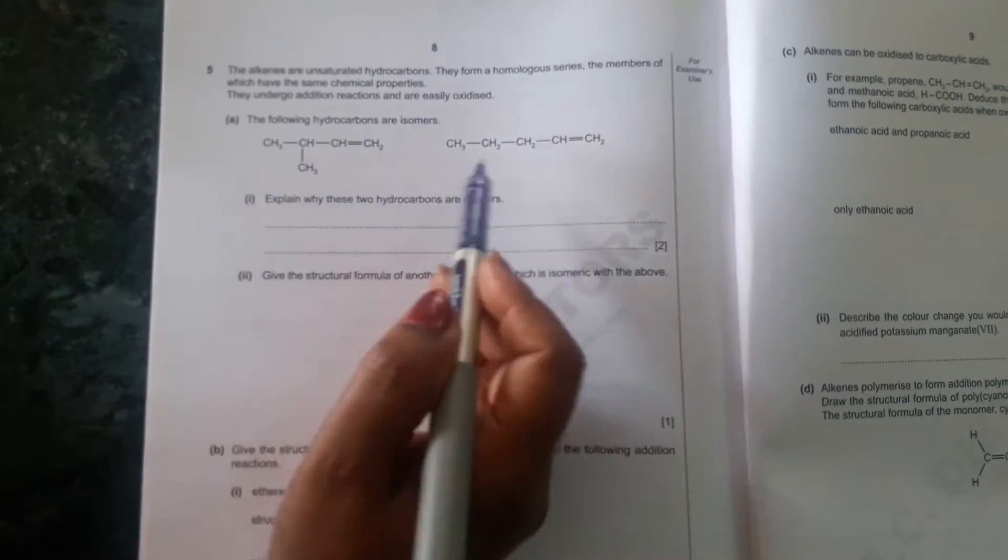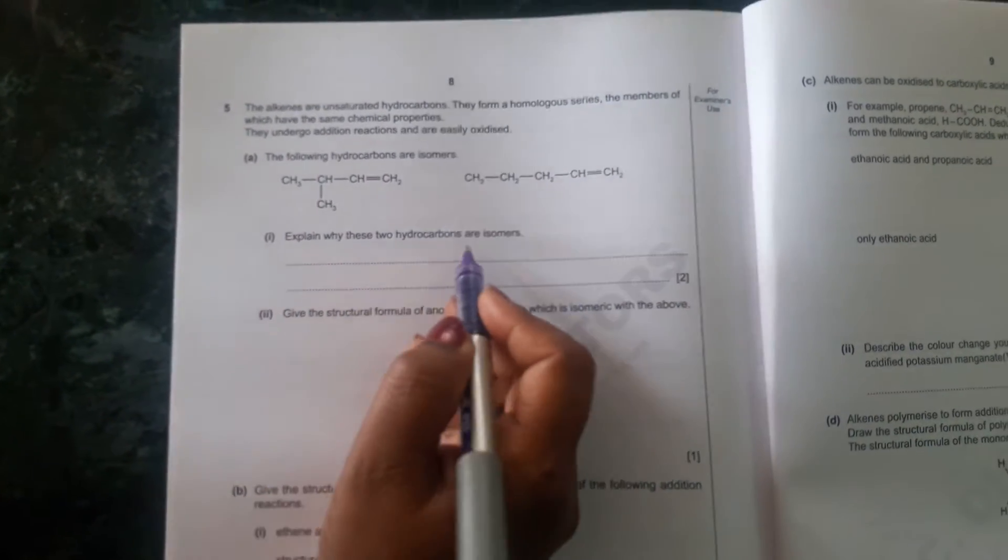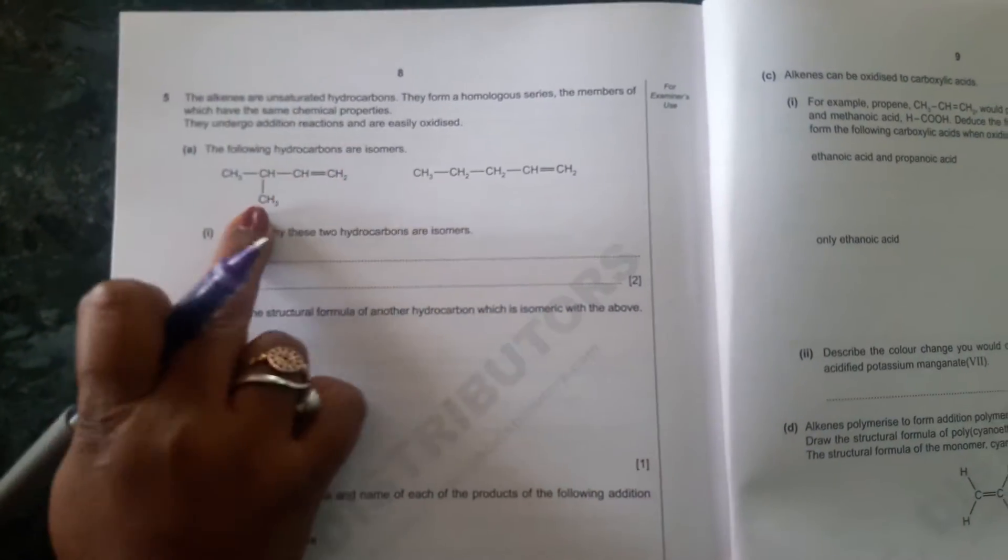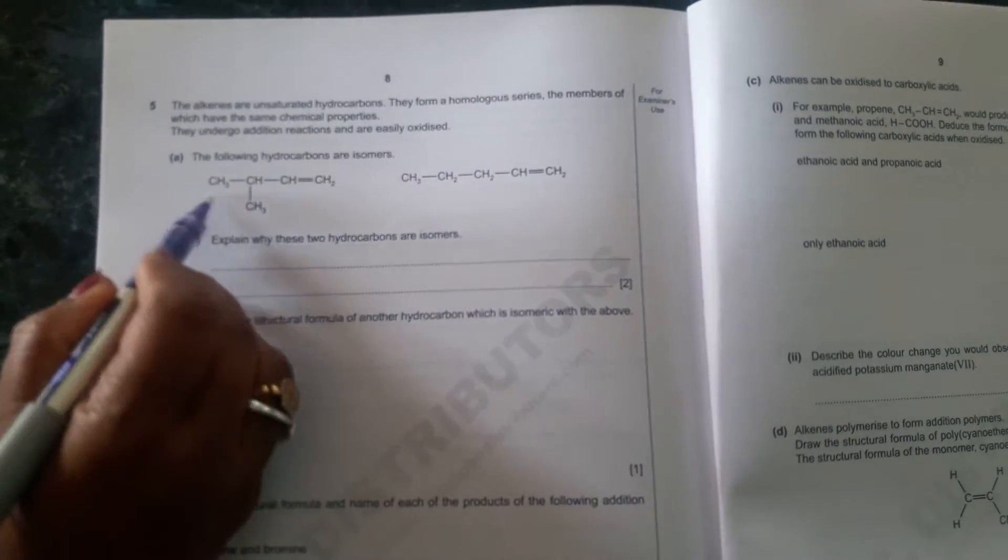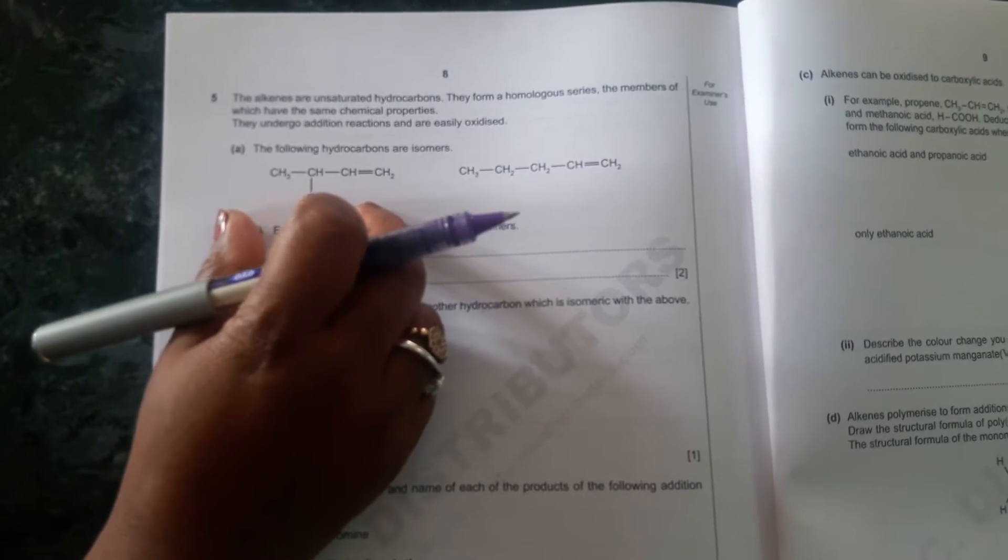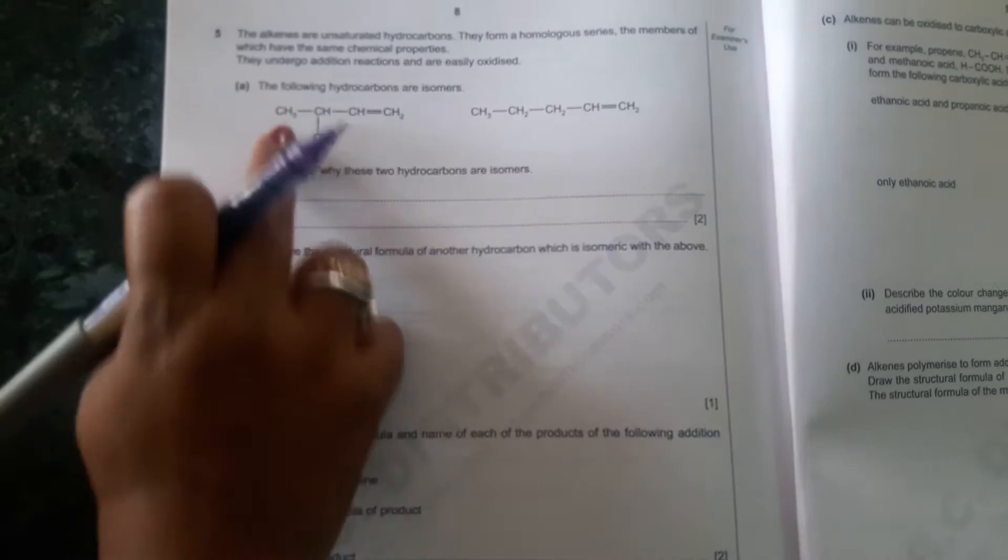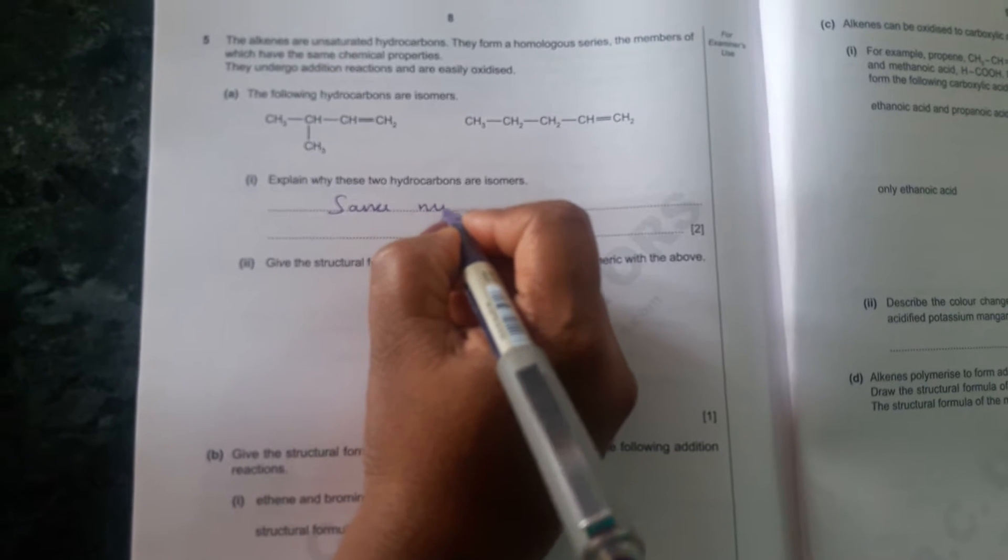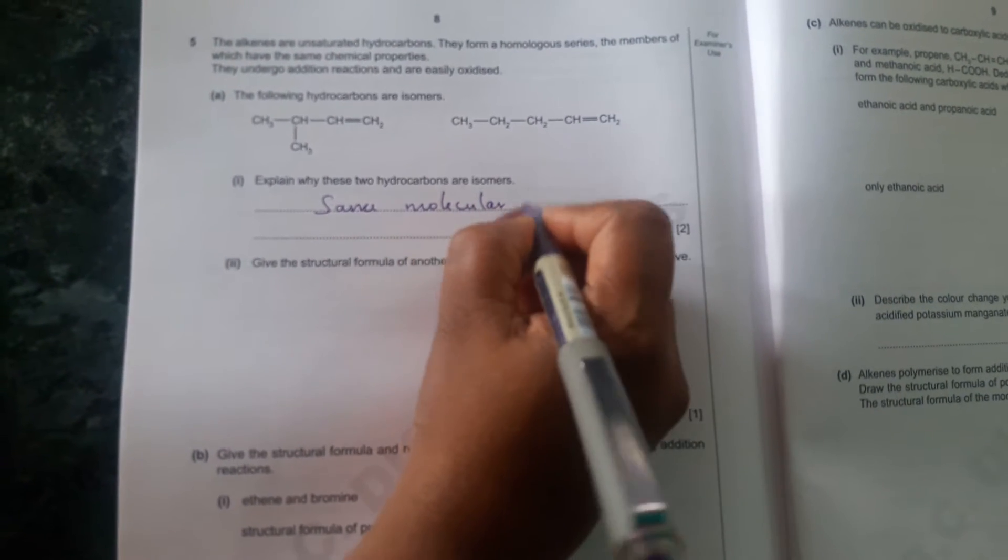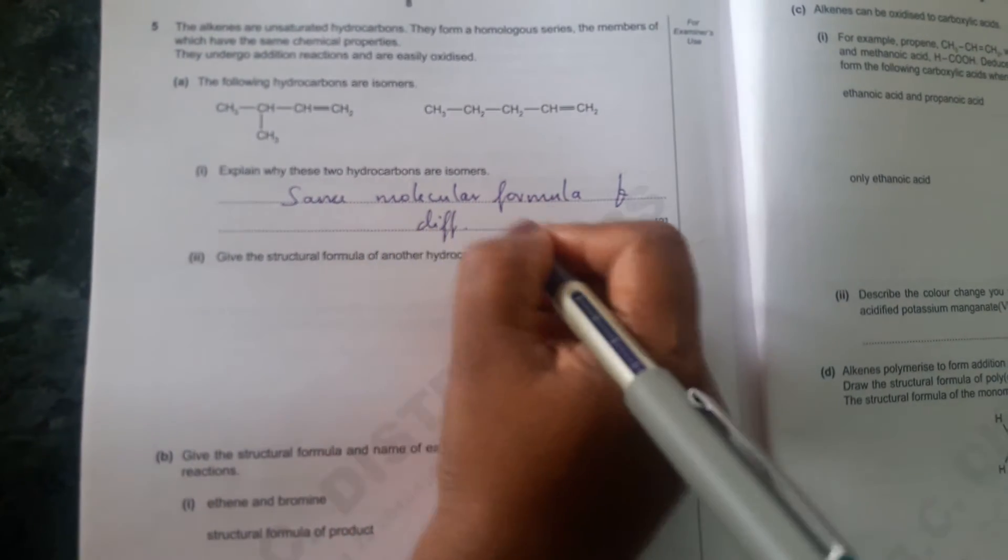The following hydrocarbons are two isomers, two alkenes. So explain why these two hydrocarbons are isomers. So if you see the number of carbon atoms over here, it is five. And over here also five carbon atoms. And if you see the hydrogen atoms, six, seven, eight, nine, ten. Ten hydrogen atoms. And here also ten hydrogen atoms. And both are alkenes. So both the hydrocarbons are isomers, which has same molecular formula and different structural formulae.